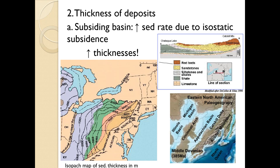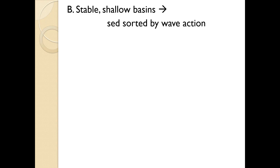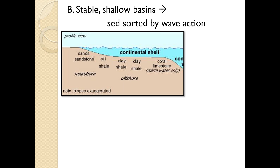Using Florida as the other extreme: where you have stable, shallow basins not significantly changing in elevation, sediment gets sorted by wave action in a very predictable way. The part of the continent drowned by the ocean due to rising sea level is the continental shelf. On the continental shelf we see a predictable sequence: sand, then silt, then clay, then limestone and coral in warm water. You see that predictable transition from sandstone to siltstone to shale to limestone.